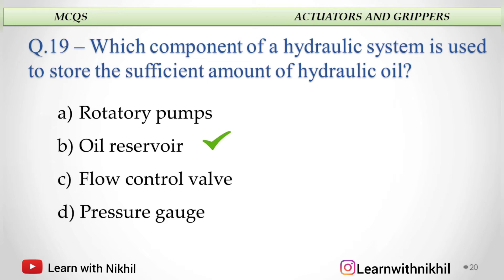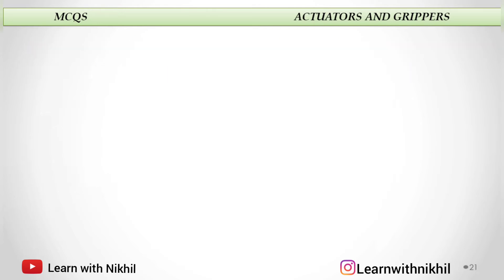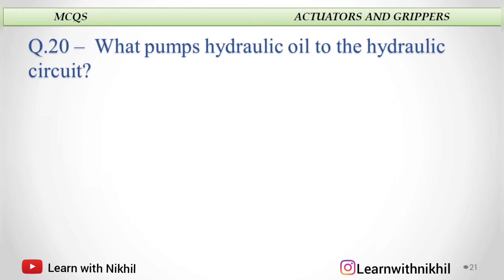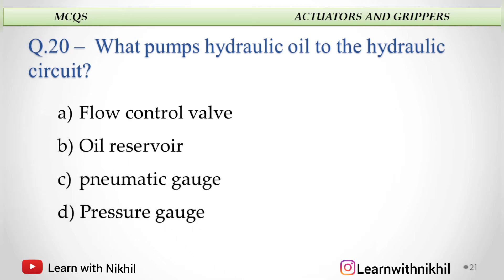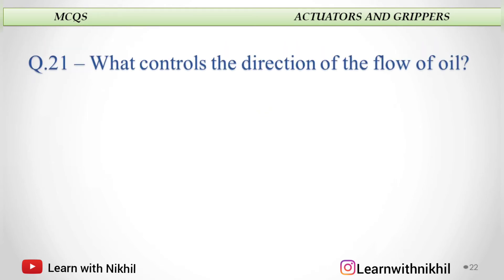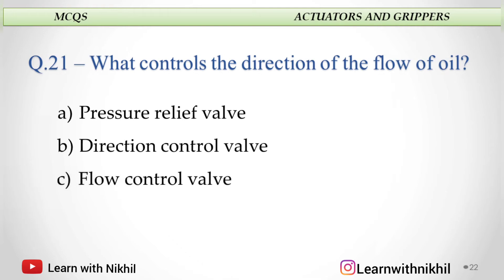What pumps hydraulic oil into the hydraulic circuit? A. Flow control valve, B. Oil reservoir, C. Pneumatic gauge, or D. Pressure gauge? And the answer is flow control valve. What controls the direction of the flow of oil? A. Pressure relief valve, B. Direction control valve, C. Flow control valve, or D. Actuator? And the answer is direction control valve.